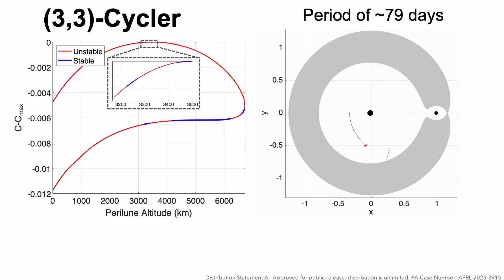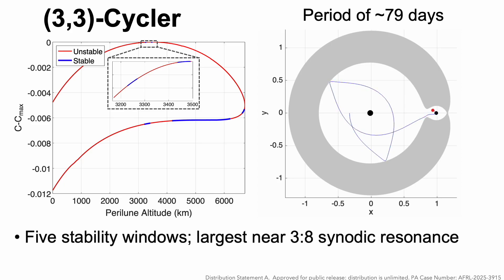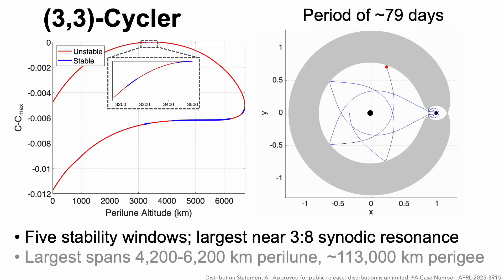The largest one, between about 4,000 and 6,000 kilometer altitude, is near the 3-8 synodic resonance. And these trajectories also have a perigee of about 113,000 kilometers, or three times GEO.